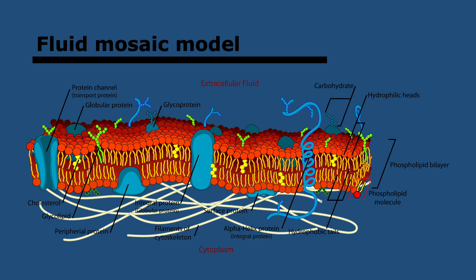For SL students, this is the fluid mosaic model — the current model. It states that the plasma membrane is made of a bilayer of phospholipids with proteins in a variety of positions, and that the phospholipid molecules can move laterally, as can the proteins, making it therefore fluid. You can see everything we've talked about: glycoproteins, glycolipids, peripheral proteins, integral proteins. Now for those in HL, let's carry on.